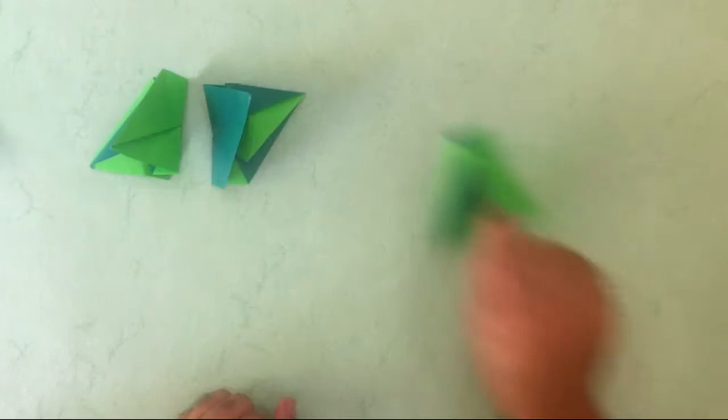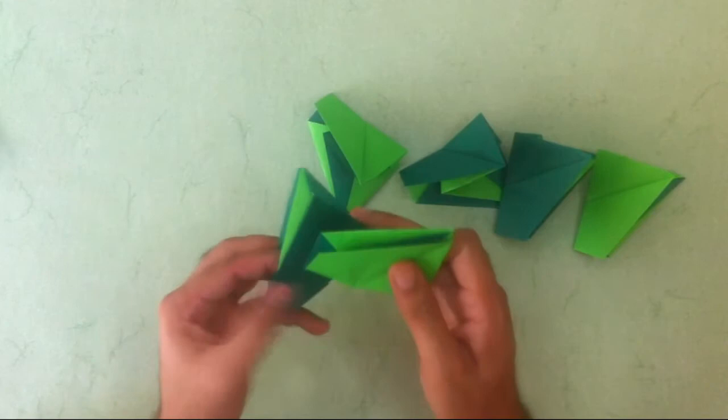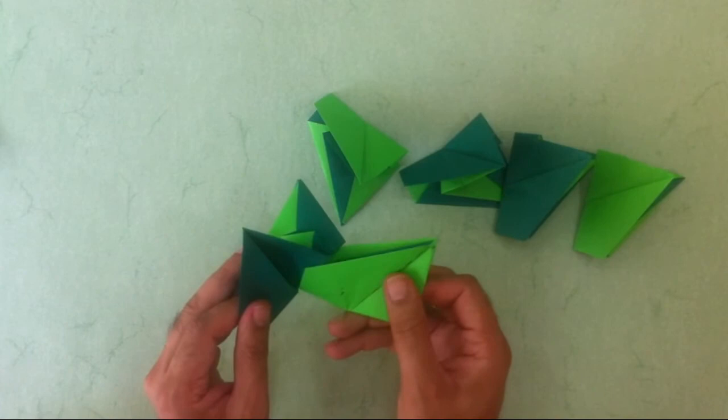I have made all the six of them. And now it is time to assemble all the units. What we have here is actually a tab. This is the tab. And the pocket is right here. This is actually the pocket. So I am putting the tab into the pocket.